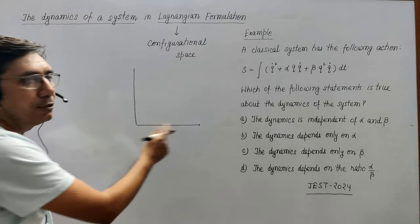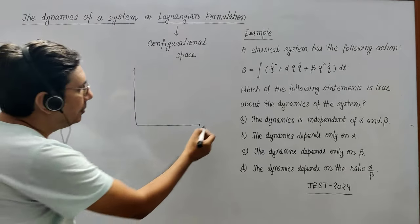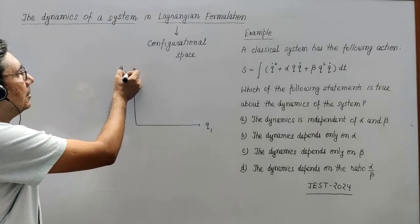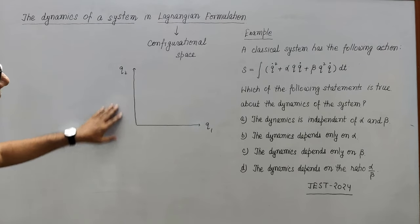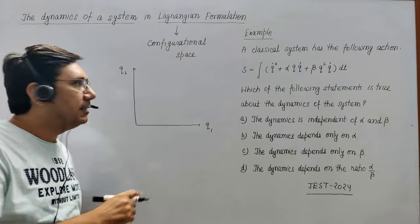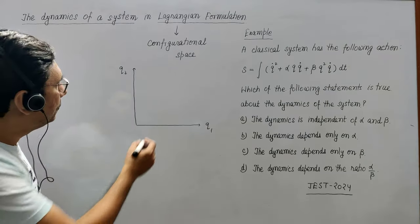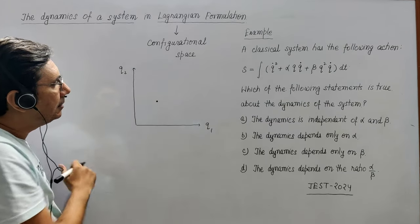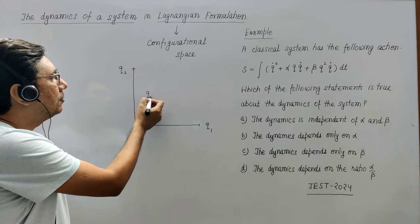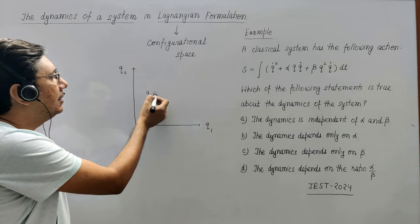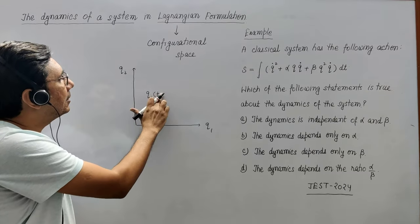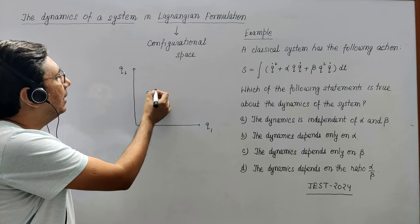Because on the board I cannot show the n-dimension, here I am choosing q1 and qi. This is a configurational space — an n-dimensional space where all the possible states can be represented by a point. Suppose a classical system is represented by this point at time t, written as qi(t1). This is the state of the system at time t1.